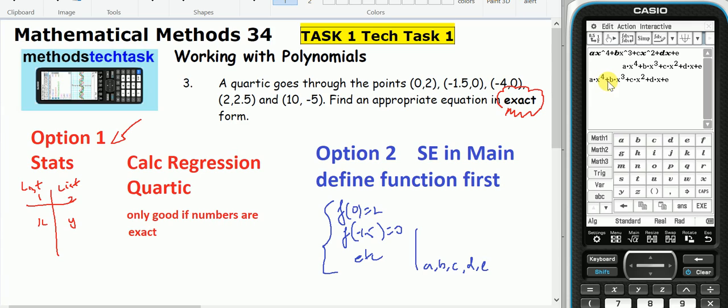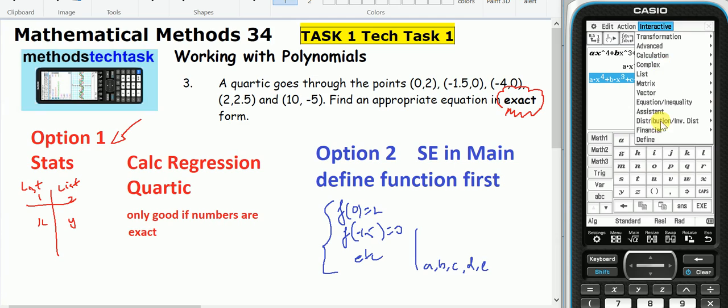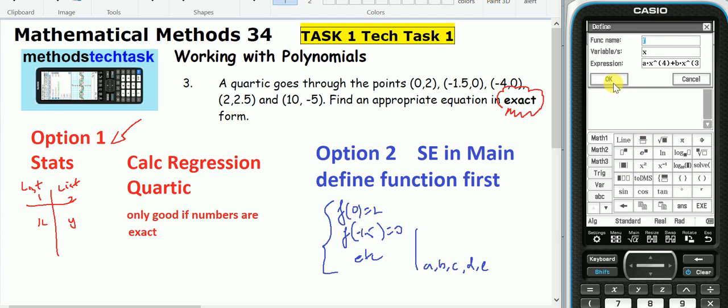A x to the power of 4 plus B x cubed plus C x squared plus D x plus E. So I'm going to select that. Interactive define. I'll define that as f of x.